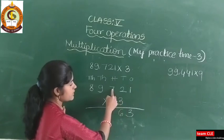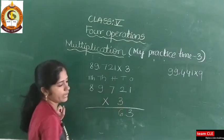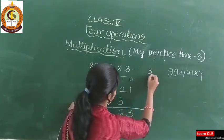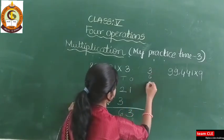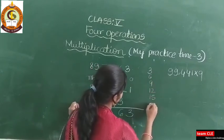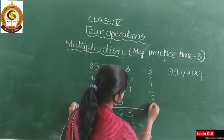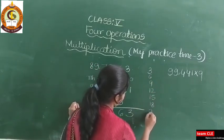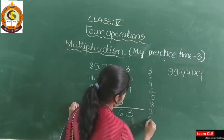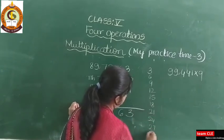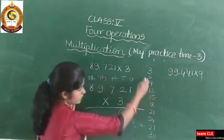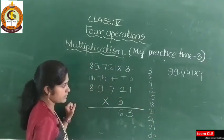Next, 3 sevens are 21. I will write the 3 times table for reference: 3 ones are 3, 3 twos are 6, 3 threes are 9, 3 fours are 12, 3 fives are 15, 3 sixes are 18, 3 sevens are 21, 3 eights are 24, 3 nines are 27, 3 tens are 30. This is the 3 times table.